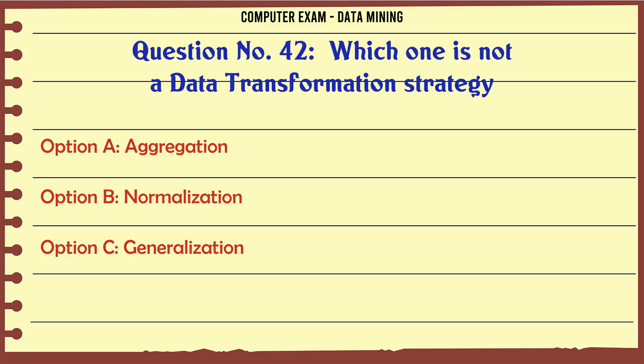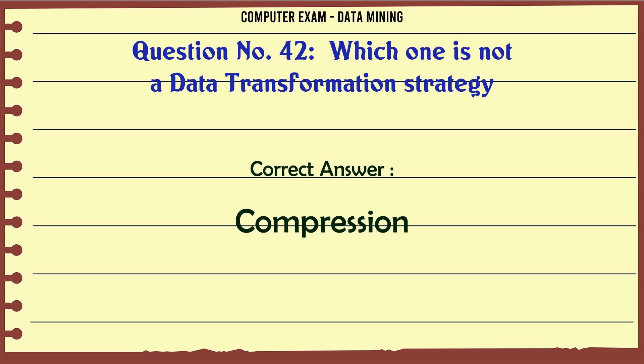Which one is not a data transformation strategy? A. Aggregation. B. Normalization. C. Generalization. D. Compression. The correct answer is Compression.